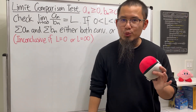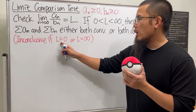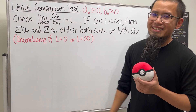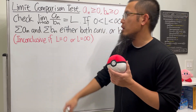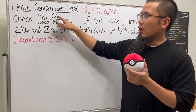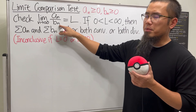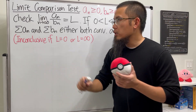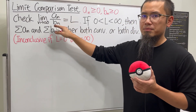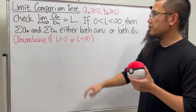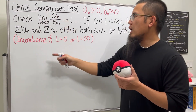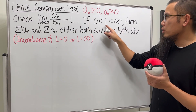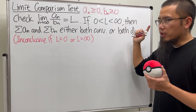Let's talk about why we cannot draw any conclusions if we end up with L equal to zero or L equal to infinity when we are trying to do the limit comparison test. Here's a quick review: first we compute the limit as n goes to infinity of aₙ over bₙ, keeping in mind that aₙ and bₙ have to be non-negative. Suppose we end up with some number L — if L is between zero and infinity, then we get to draw a conclusion.